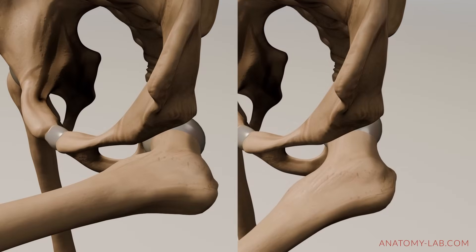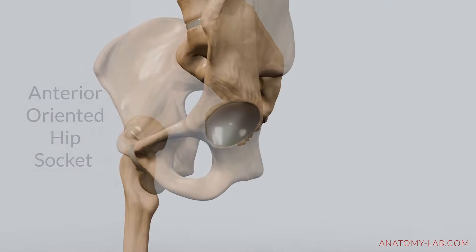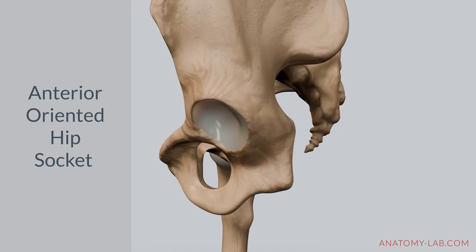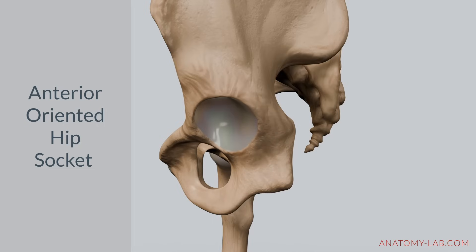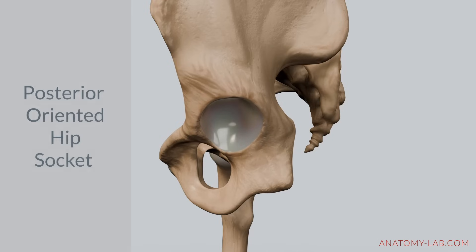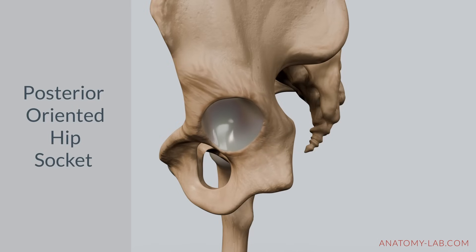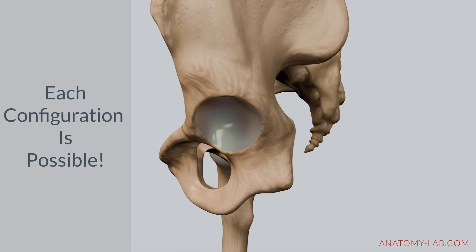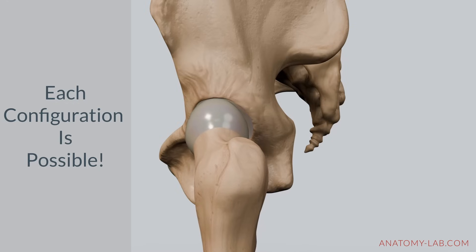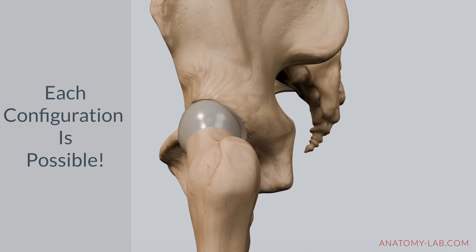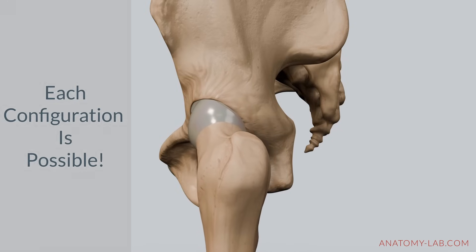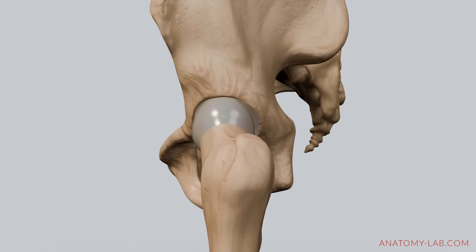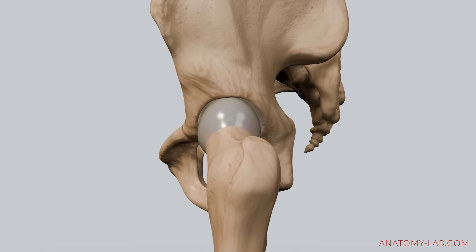Now let's examine the orientation of the acetabulum. On screen you can see what it looks like when the hip socket is oriented towards the front, and I also added a change of depth. On the contrary, you can see what it looks like when the acetabulum is oriented more towards the back, again with a change of depth. Let's bring back the femur and have a look at how both of these factors look when put together — a forwards-oriented hip socket with changes of depth, and then an anteriorly-oriented hip socket also with changes of depth.